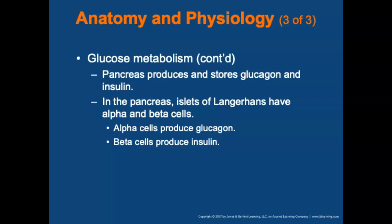The islets of Langerhans are found in a small portion of the pancreas. Within these islets are alpha and beta cells. The alpha cells produce glucagon, and the beta cells produce insulin. The pancreas stores and secretes insulin and glucagon in response to levels of glucose in the blood.